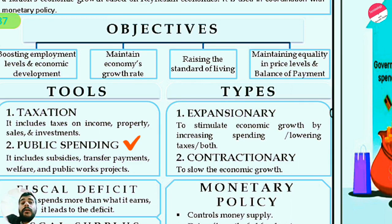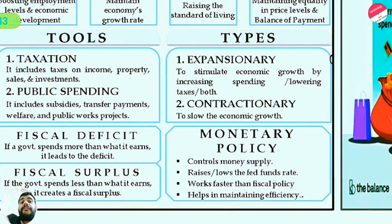Public spending includes subsidies, transfer payments, welfare, and public works projects — all infrastructure development falls under public spending. A fiscal deficit is when the government spends more than it earns. A fiscal surplus is when the government spends less than it earns.